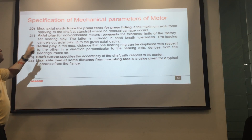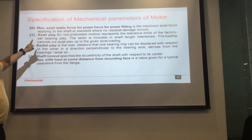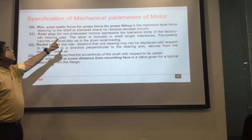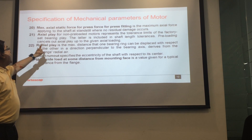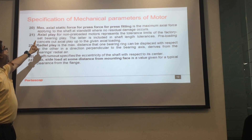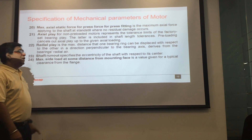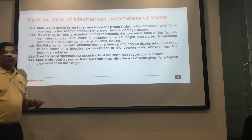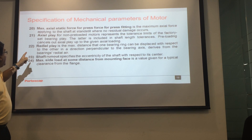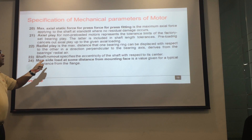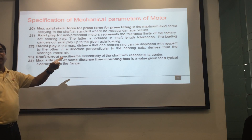Next we come to the mechanical parameters of the motor. First is maximum axial static force — this is the force used to press-fit the shaft and applied to the shaft when the shaft is at standstill, such that no residual damage occurs. Next is axial play, radial play, and shaft run-out — shaft run-out is the eccentricity of the shaft with respect to its center.